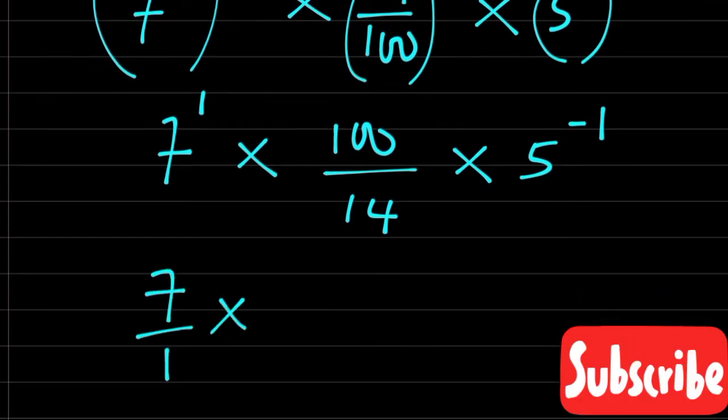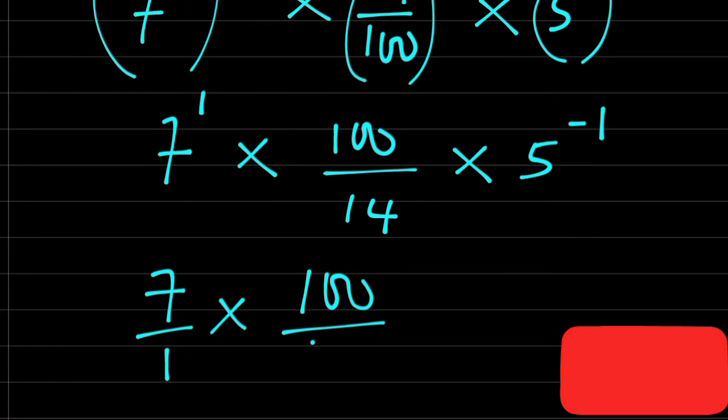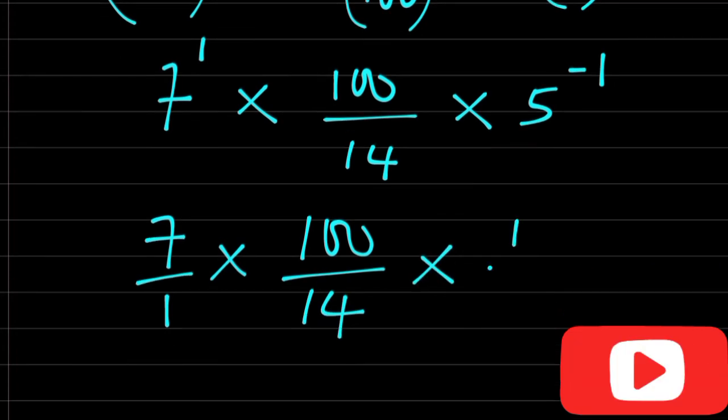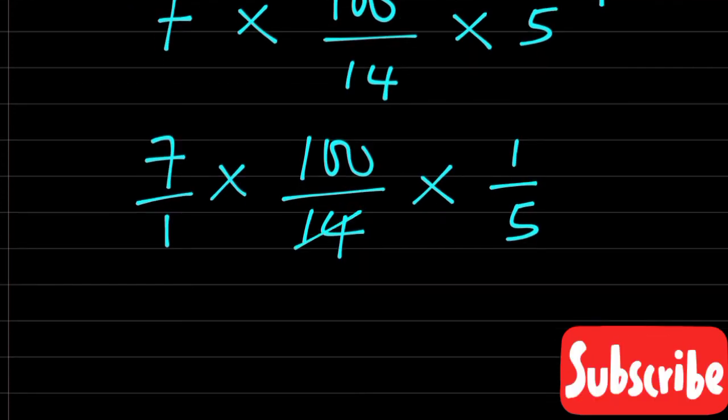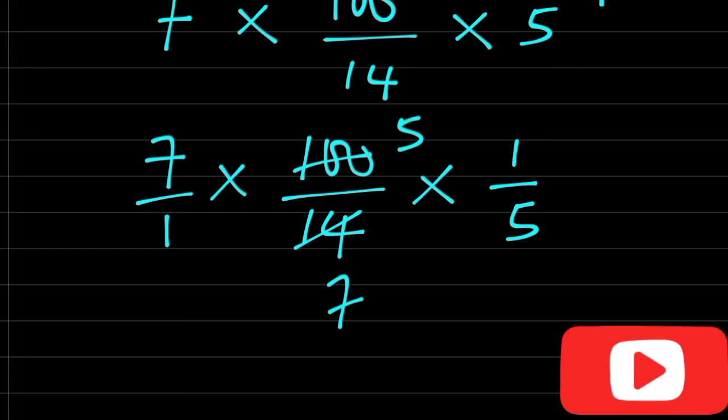Therefore, I have 7 over 1 times 100 over 14 then times 1 over 5. 2 goes here 7, 2 goes here 50.